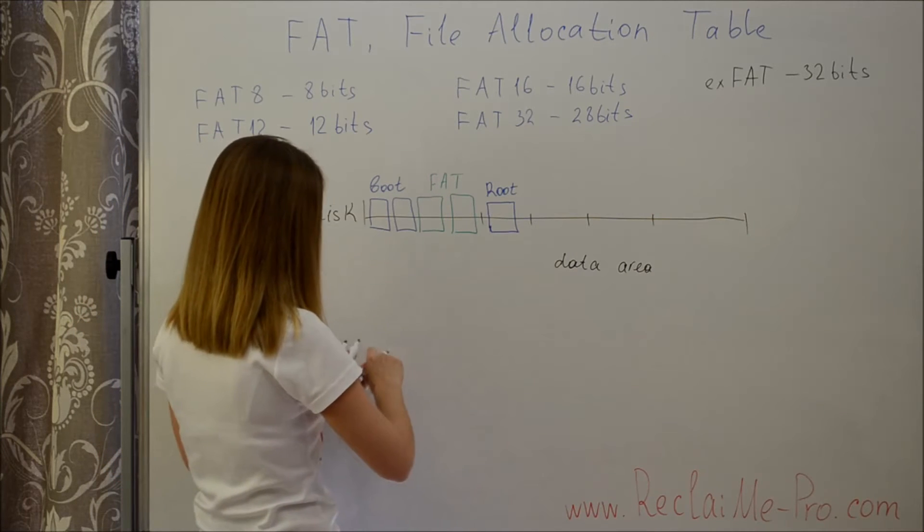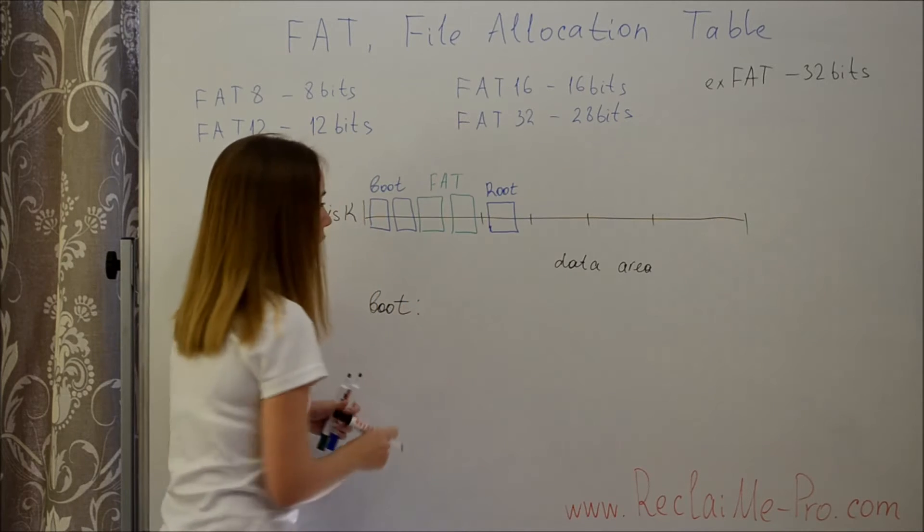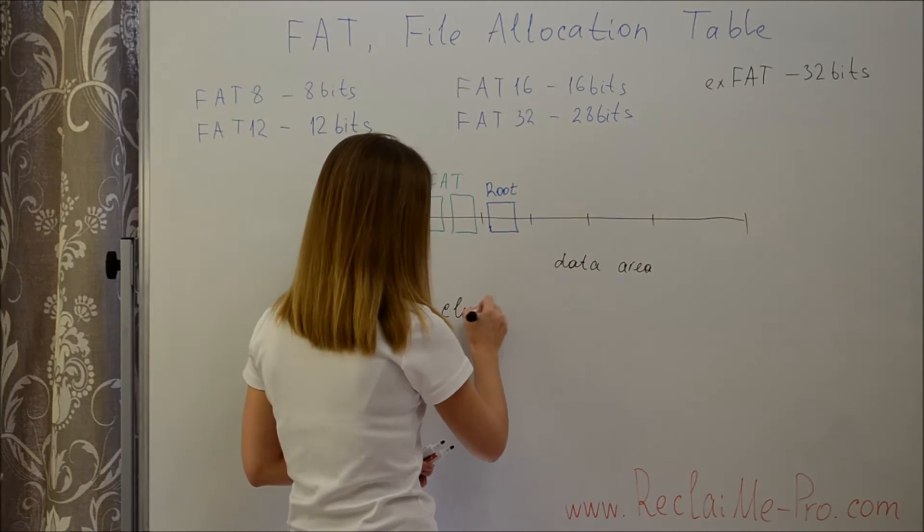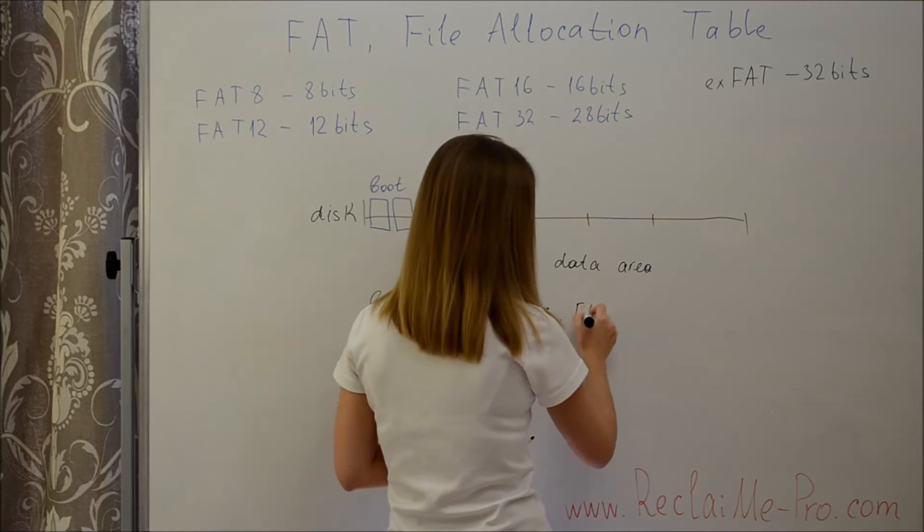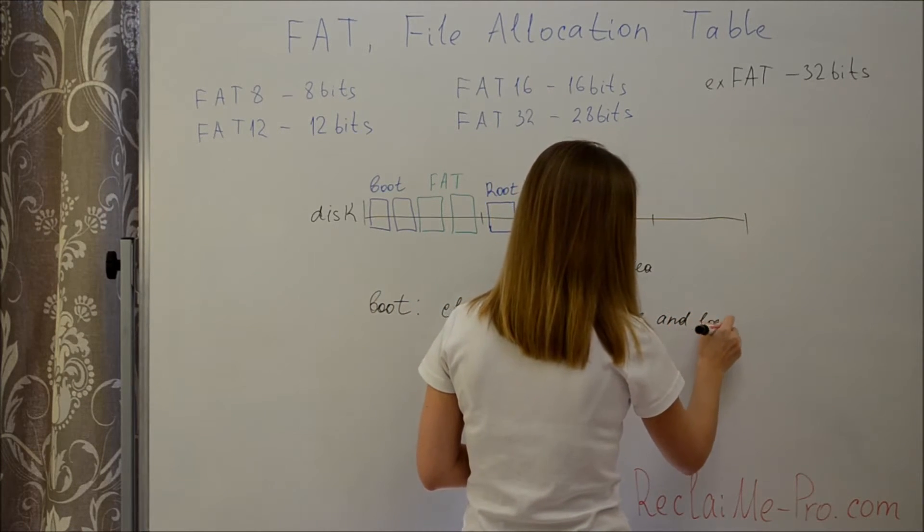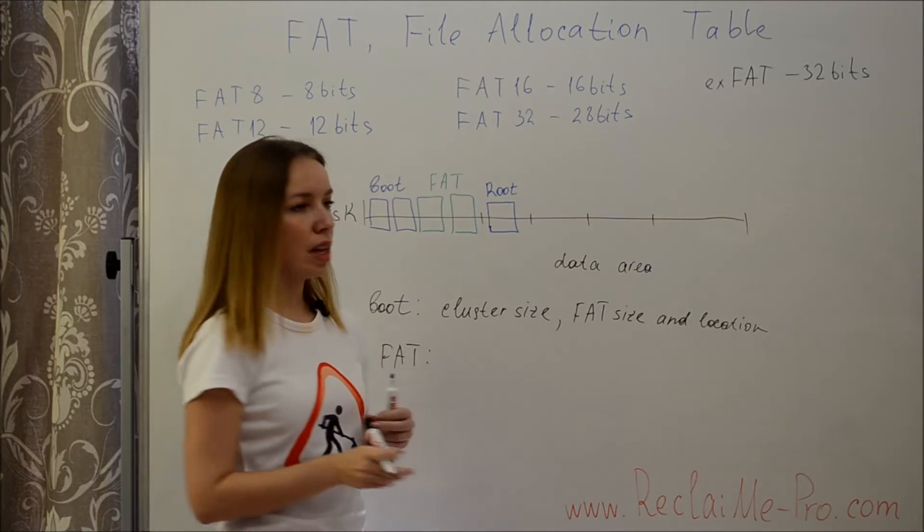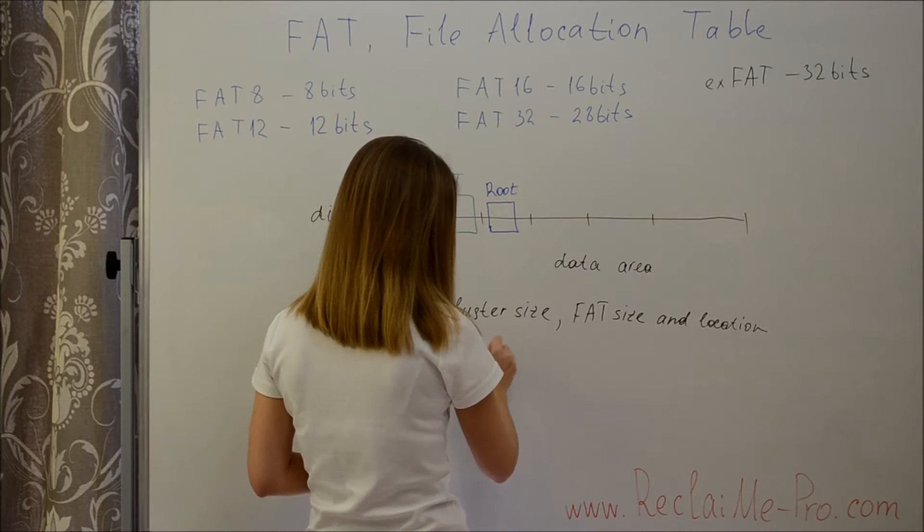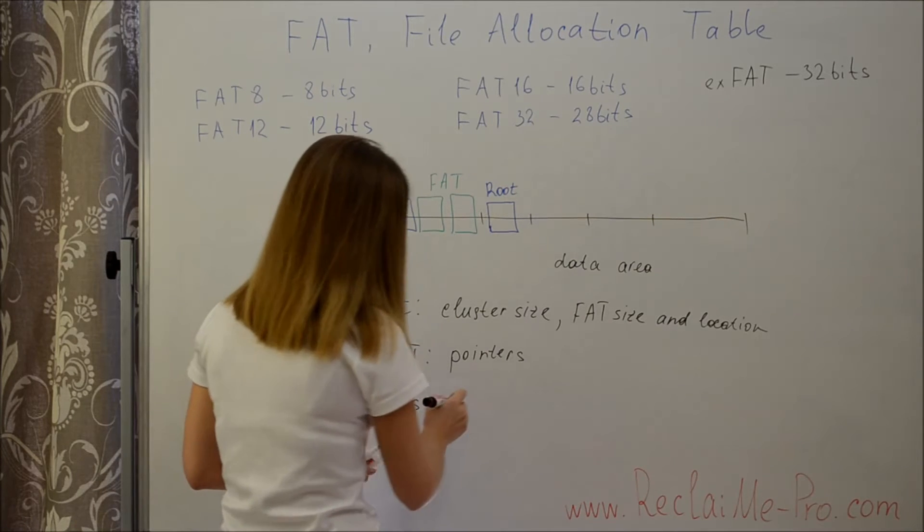Boot sectors store the main information about file system: cluster size and the FAT table location and size. FAT tables store the location of files on the data area. And the directories store file names, sizes, date and time of file creation, and the numbers of the first clusters.